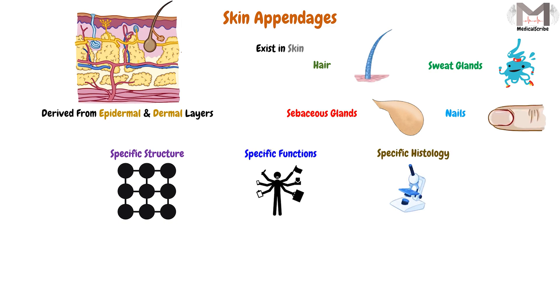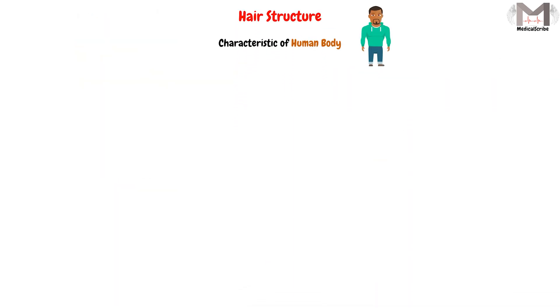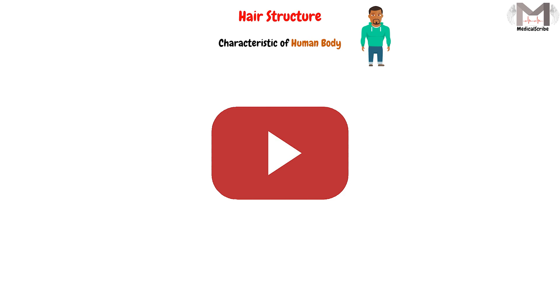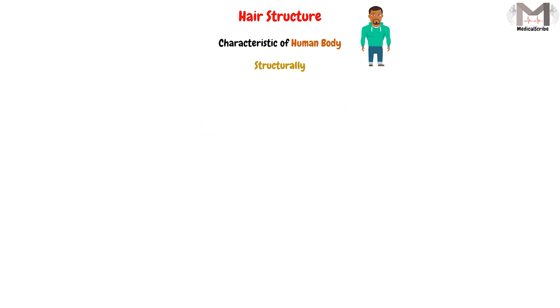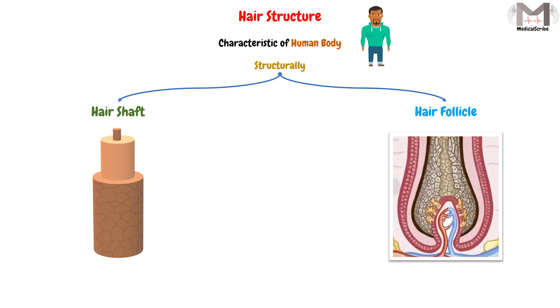Today we will talk about the hair structure, which is the first element in these appendages. The hair is one of the characteristics of the human body, which has many features and functions that we will explain in upcoming videos. Structurally, every hair consists of two major parts: the hair shaft and the hair follicle.